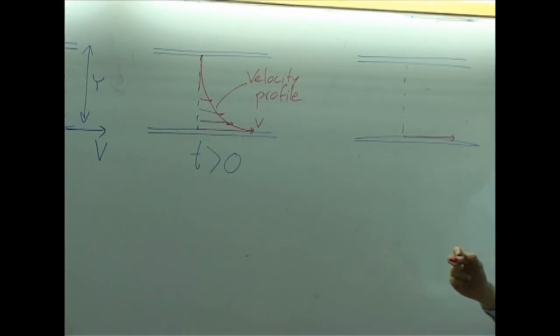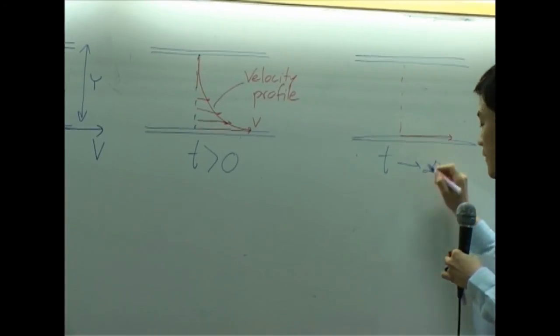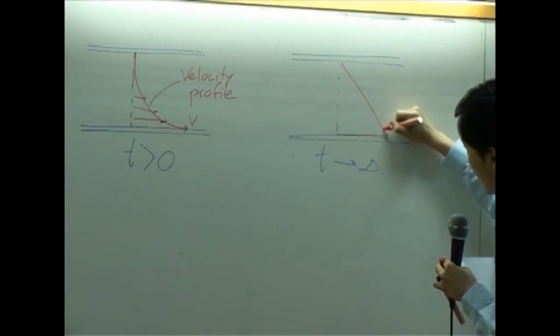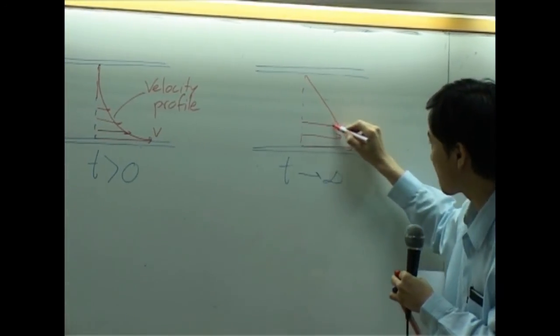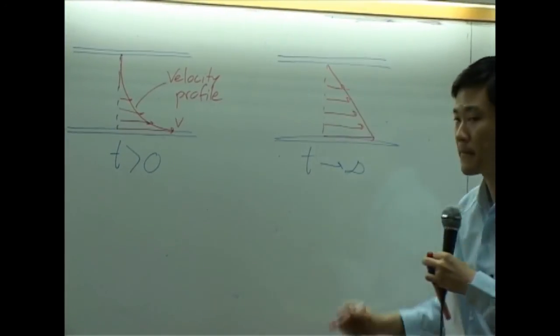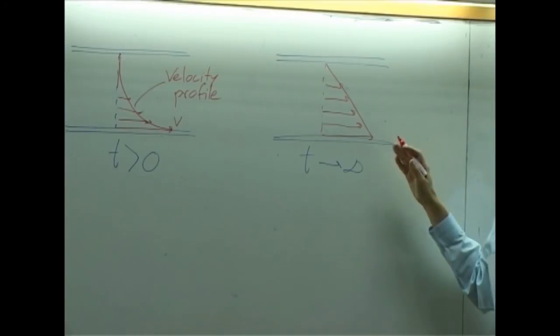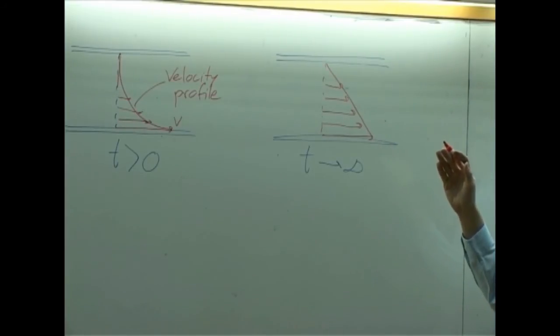So, as time is going longer and longer until you reach T approaching infinite or long enough, what you have would be something like this. The velocity profile would turn to be linear.